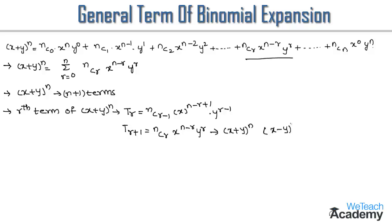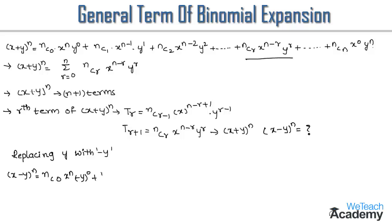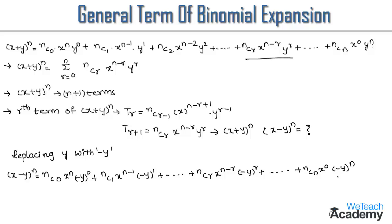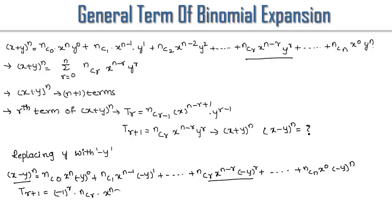Now, what is the general term in the expansion of (x - y)^n? By replacing y with -y in the binomial theorem, we get (x - y)^n = nC0 * x^n * (-y)^0 + nC1 * x^(n-1) * (-y)^1 + ... + nCr * x^(n-r) * (-y)^r + ... + nCn * x^0 * (-y)^n. So the general term T_{r+1} in the expansion of (x - y)^n is given by (-1)^r * nCr * x^(n-r) * y^r. These are the formulas for the general term in the expansion of (x+y)^n and (x-y)^n.